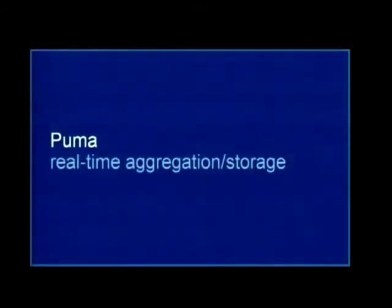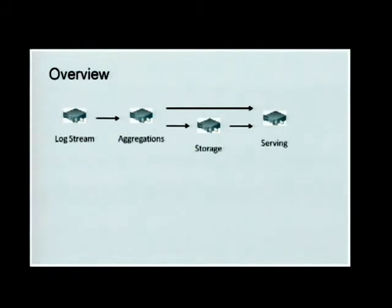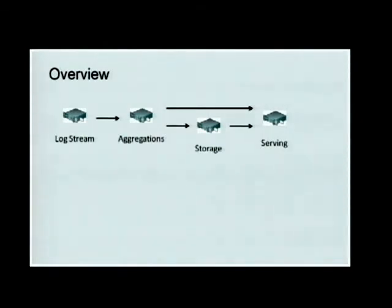The second major component is called Puma — it's a real-time aggregation engine plus storage. To talk about Puma, it's useful to go through a typical back-end aggregation architecture: a log stream gets pushed into aggregation engines, which do the aggregation either in memory or through other ways. The summaries can then be saved to storage. When we want to serve that summary data, serving can either come directly from the aggregation engine or from storage.